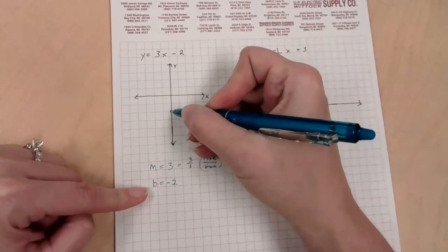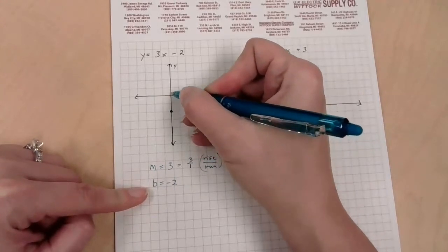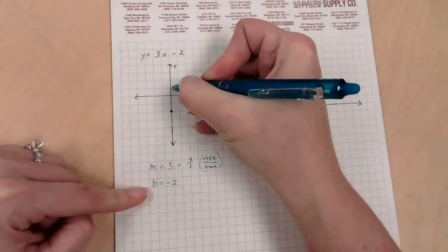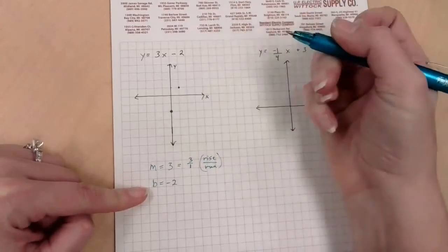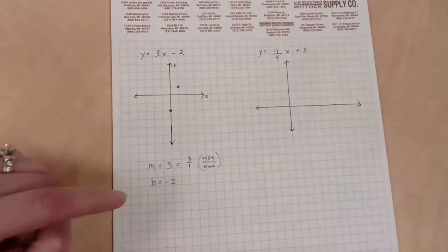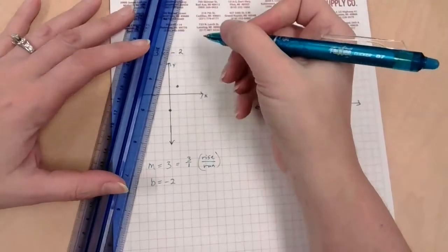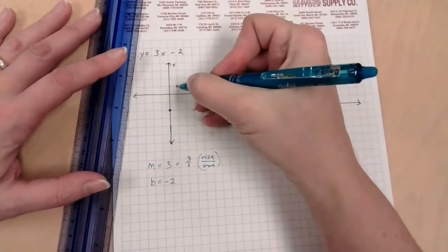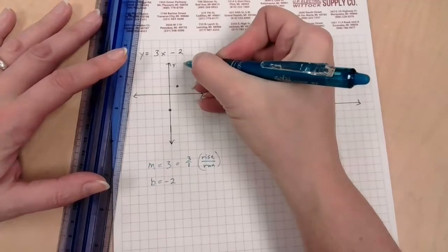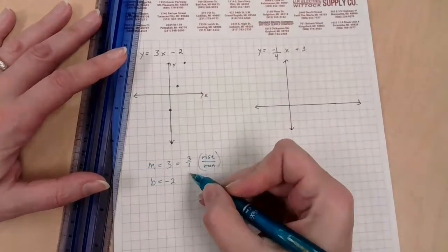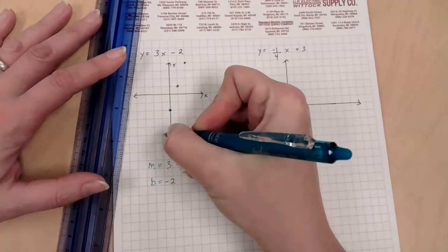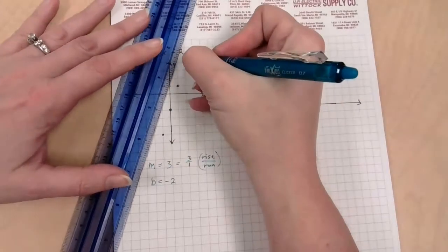Start with the y-intercept. This is a point that I know is on the line. Here's my x-axis, here's my y-axis. Where is negative two on the y-axis? Negative one, negative two, right there. That is one of my points. Three, we can write that as three over one. The first number on top is my rise, and the second number on the bottom is my run. I'm going to rise three, one, two, three. I'm going to run one.